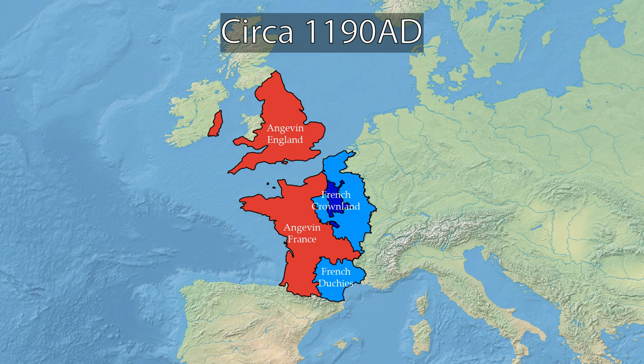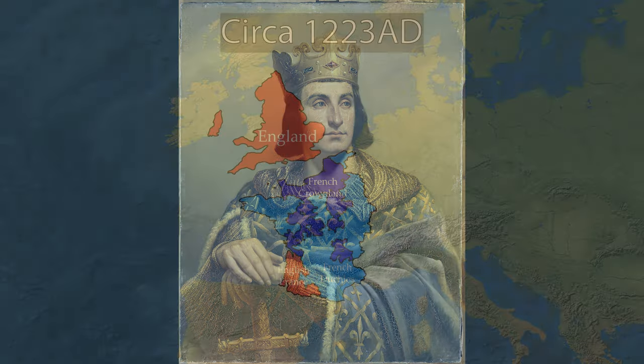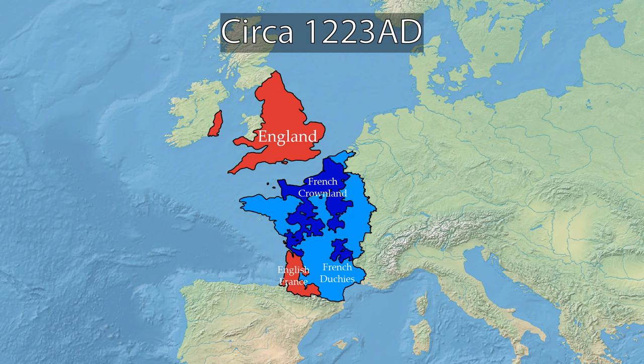A key reason the French struggled to do so was that France was a very decentralized kingdom, with the direct royal domain controlled by the French king being a very small piece of land, as opposed to the holdings of the autonomous dukes. Philip II Augustus, King of France, was able to reverse this tide, centralizing power and extending the crown lands drastically, whilst also removing most of the Angevin lands. He passed away in 1223. As a result of Philip's leadership, English holdings in France dwindled to a small area surrounding Gascony.